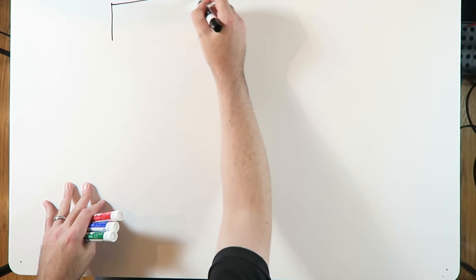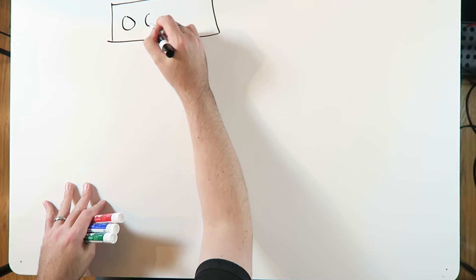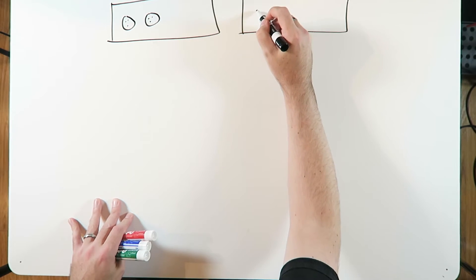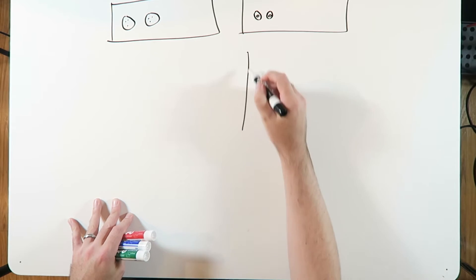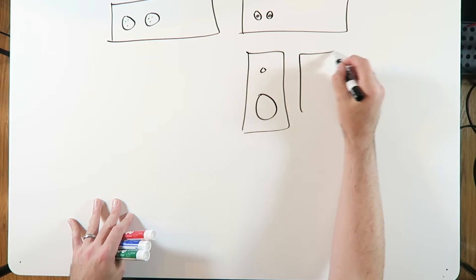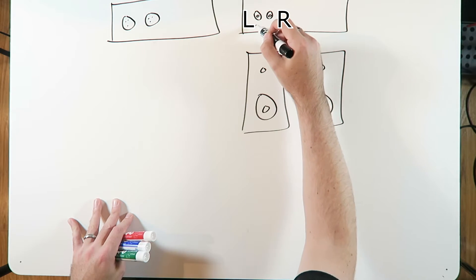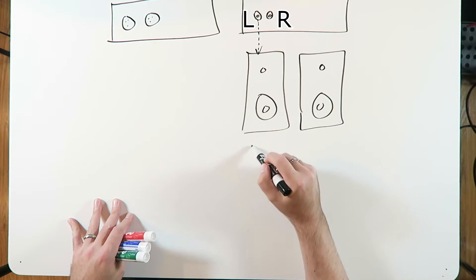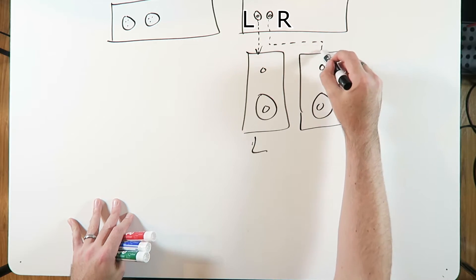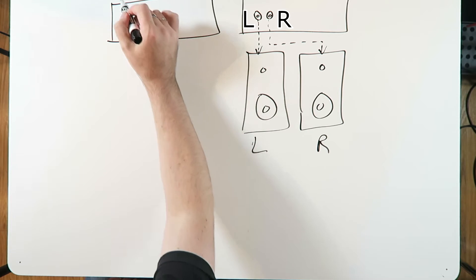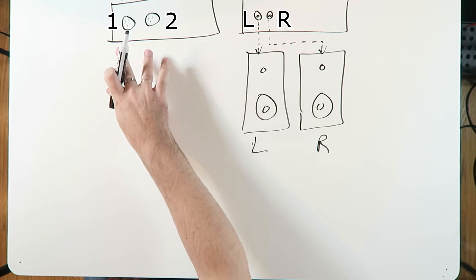Let's try an illustration and see if we can make this make sense. So let's imagine we have an audio interface with two inputs. And thinking of the back of this audio interface, we have two outputs. Let's say we're listening through a pair of speakers — we've got a left and a right output. Let's plug our left output into our left speaker and our right output into our right speaker.